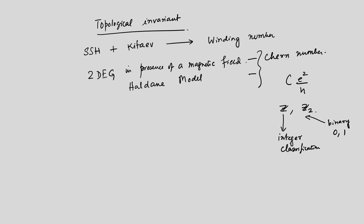Z can take values 0, 1, 2, 3 — any integer value in principle. Z₂ cannot. If you think of the winding number, it is a Z invariant because it can take values 0, 1, 2, etc. — it depends on how many times you wind around the origin as you take k over the entire Brillouin zone. You have to traverse it again to have another winding, and so on.